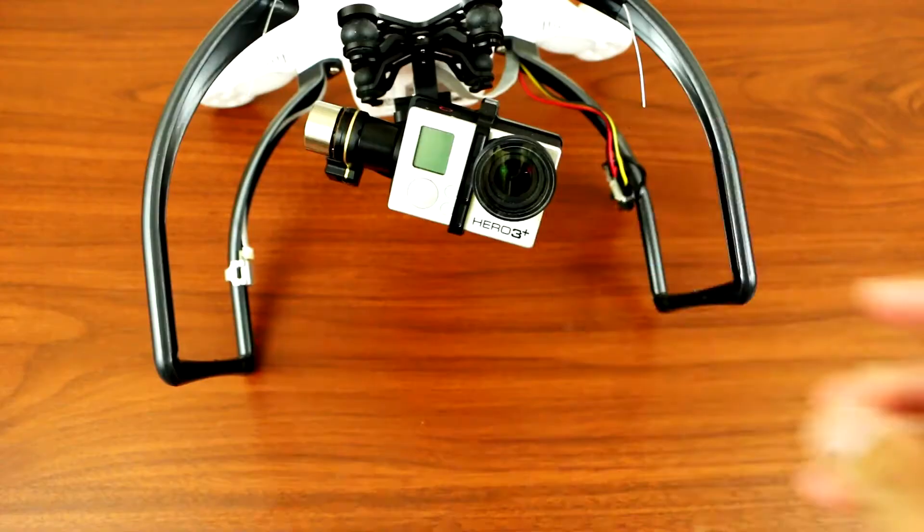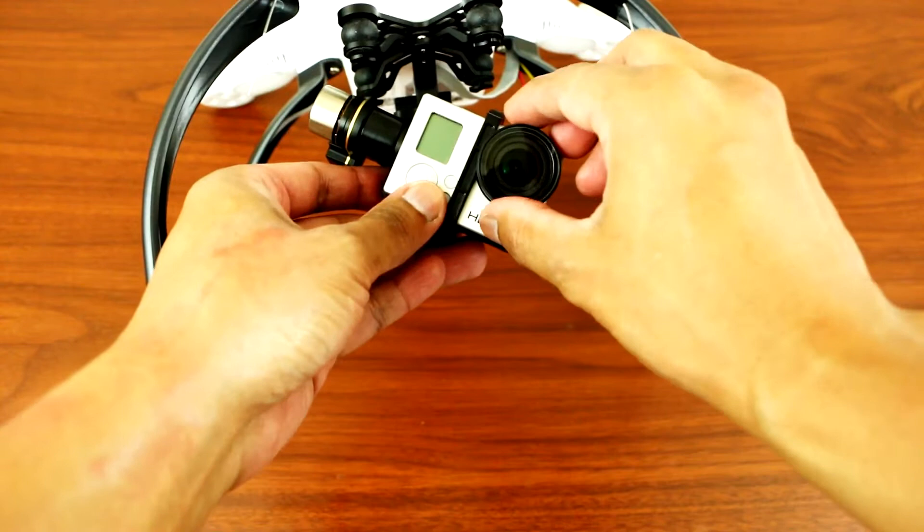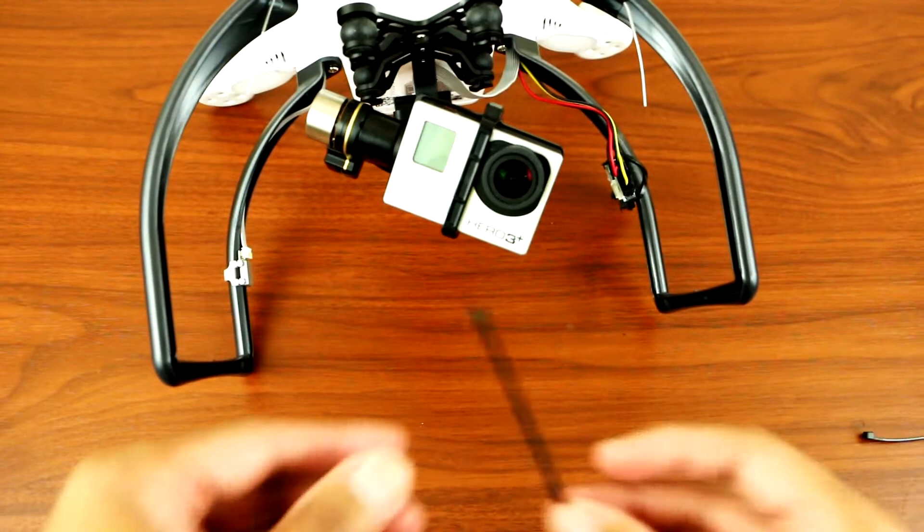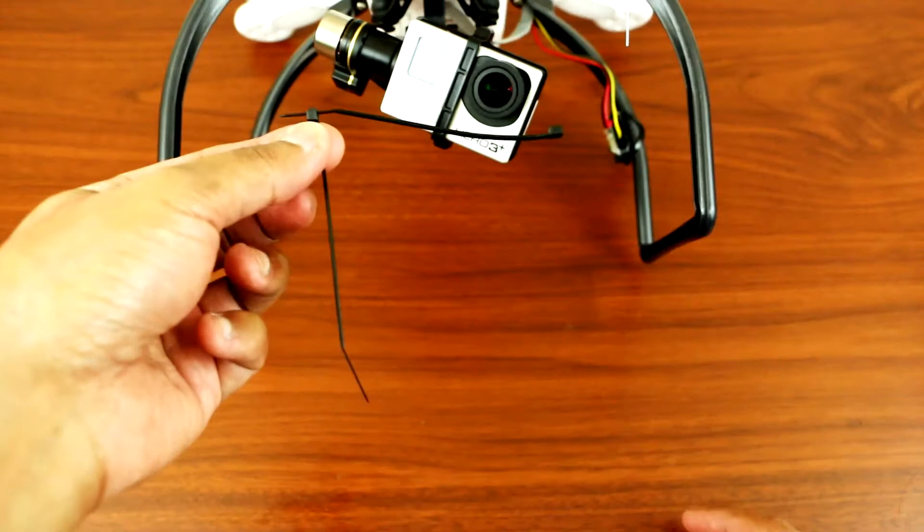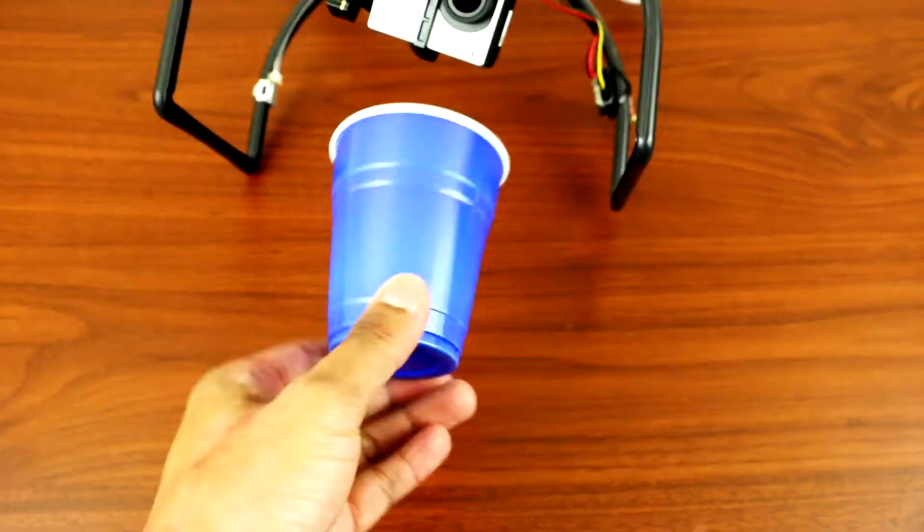So I came up with something. Instead of using a lens cap or lens protection, all you need is a zip tie or lock tie. Use two zip ties, join them together like so, and then grab any cups or any plastic material.